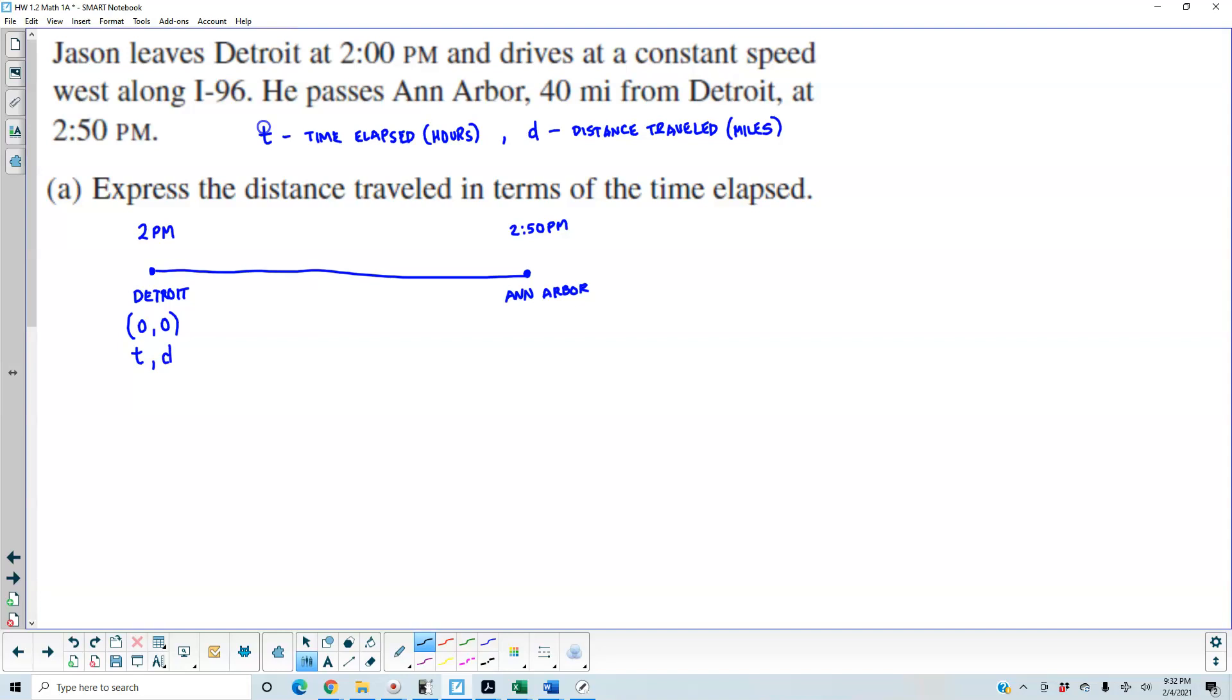Now we need to figure out what is the ending time and the ending distance. Well, we already know what the distance is. We know that 40 miles represents the distance. Now we need to figure out what the time is.